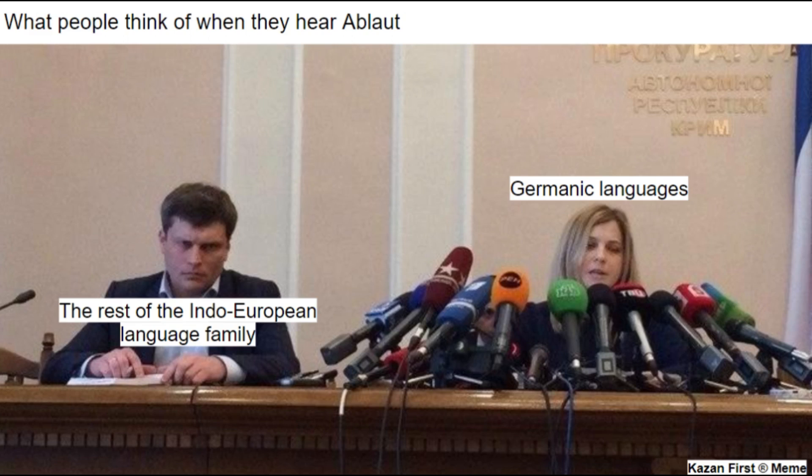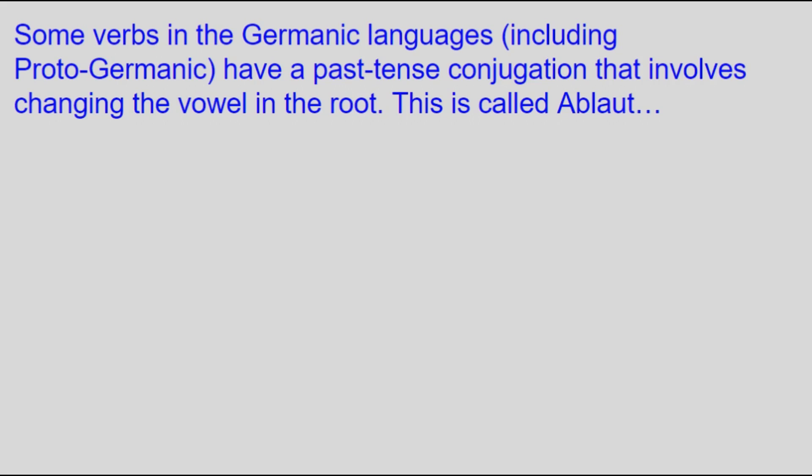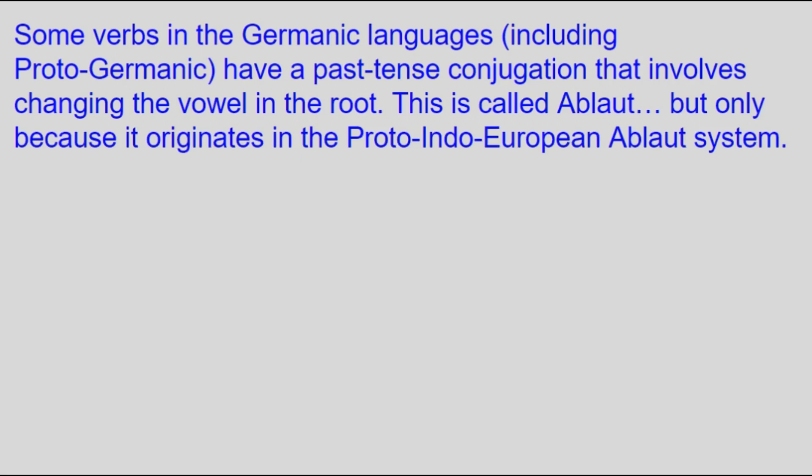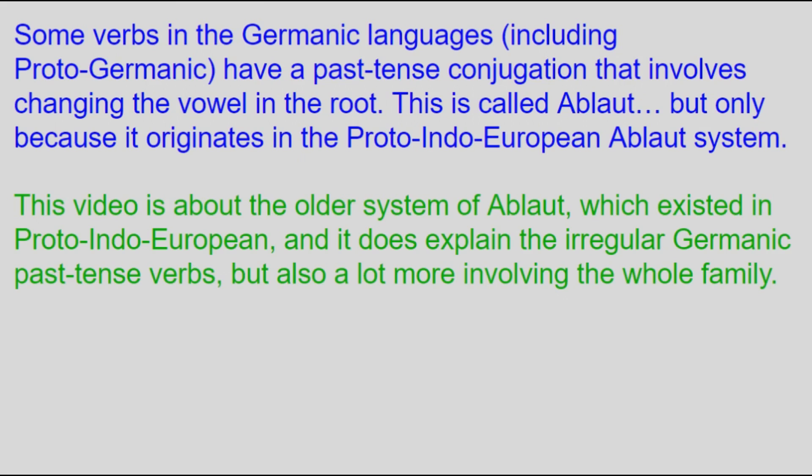To eliminate any confusion now, this video isn't specifically about Germanic languages. It is true that the term ablaut is also used for the irregular past tense verbs in Germanic languages, and that is a part of ablaut, but it goes all the way back to PIE and that deep origin is what we're focusing on.